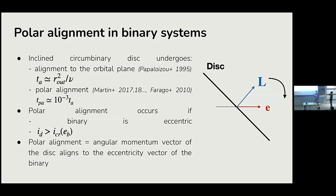The second phenomenon that can occur is polar alignment, and its timescale is shorter — about three orders of magnitude shorter than the previous one. Polar alignment occurs only if the binary is eccentric and if the initial inclination of the disk is above a critical value. This critical inclination is a decreasing function of the eccentricity, so the more eccentric the stars, the lower the critical angle.